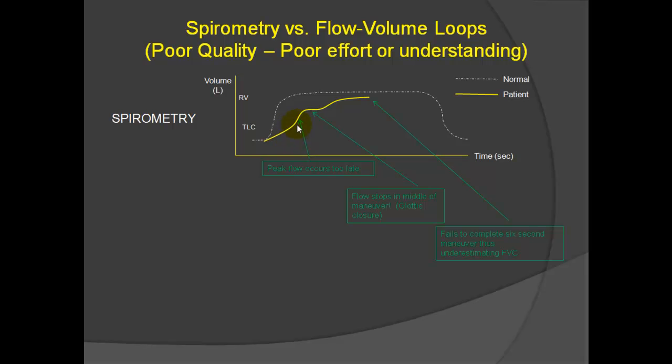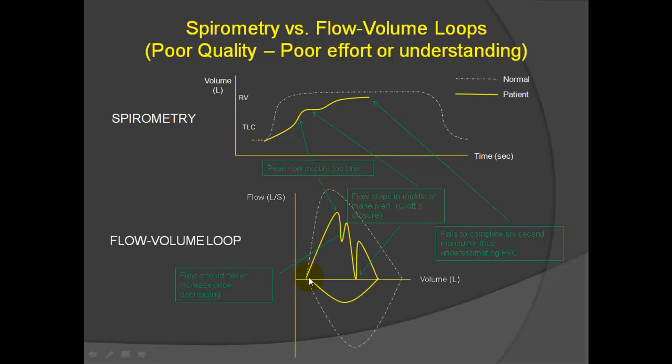Here I'm documenting that the peak flow, which is the steepest occurs very late. That should never be the case. The flow stops in the middle, and we don't get out to six seconds. They didn't even finish the maneuver. They stopped early. So what happens when someone does a poor effort? Their peak flow occurs very late. A lot of volume has come out before they hit the peak flow. Then the flow goes down, but it goes back up, and then the flow goes all the way down to zero because they stopped the maneuver, but then it goes back up. And you can just look at this visually and say that can't be right. This is poor effort or understanding. As I said on one of my first slides, interpreting this spirogram must be done with caution because the FEV1 can be seriously underestimated, the forced vital capacity could be underestimated, and the ratio of FEV1 to FVC could be either underestimated or overestimated.